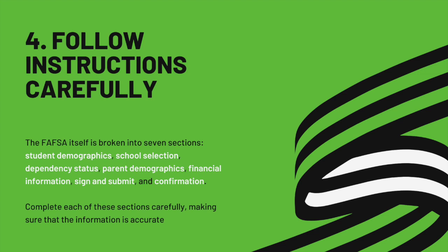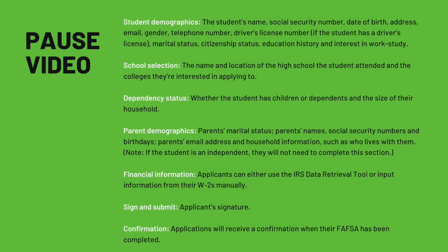Step four: follow instructions carefully. The FAFSA itself is broken down into several sections: student demographics, student selection, dependency status, parent demographics, financial information, sign and submit, and confirmation. Complete these sections carefully and make sure that all of the information is accurate. If you would like more specific explanations on what each section asks for, you may now pause the video.